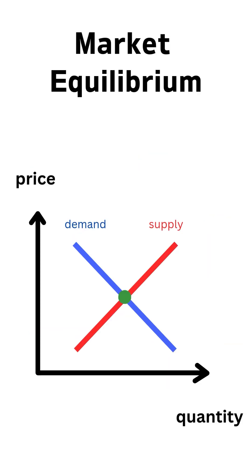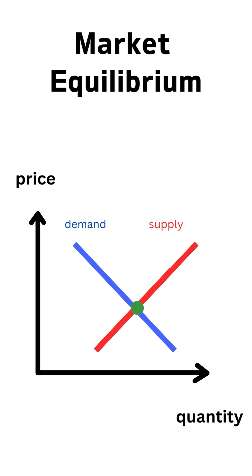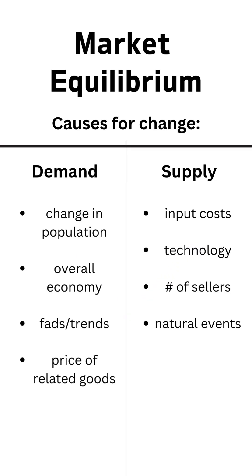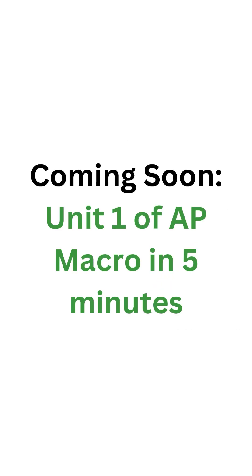Lastly, we have market equilibrium, which is a sweet spot for prices. That sweet spot changes based on changes in supply and demand. You can pause right here to see what the causes are. Full unit 1 video coming soon.